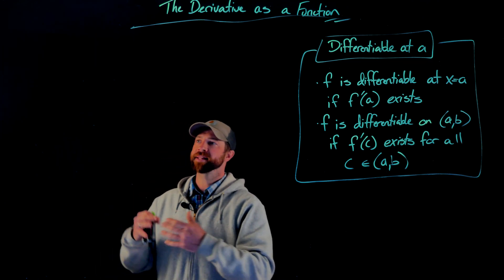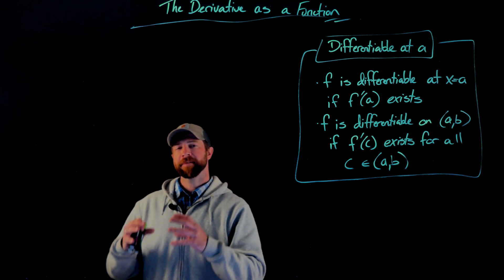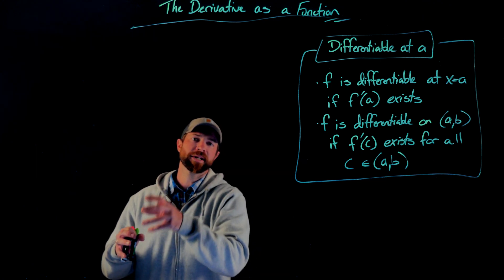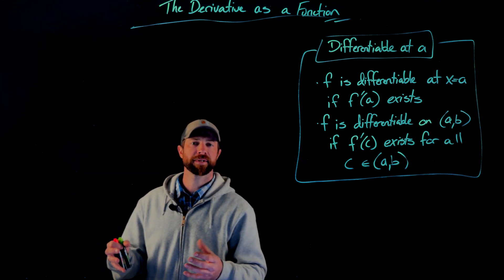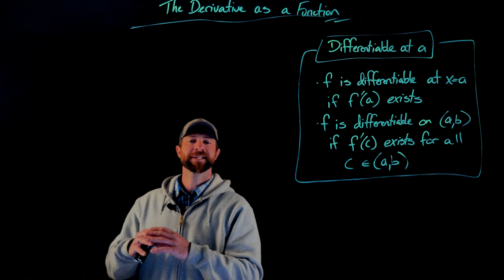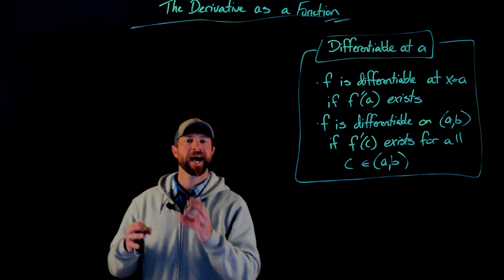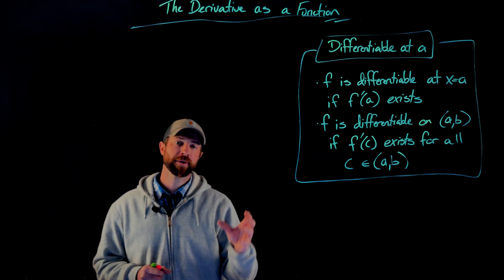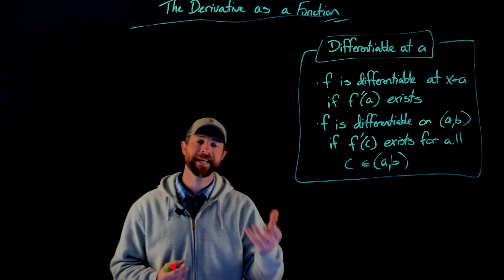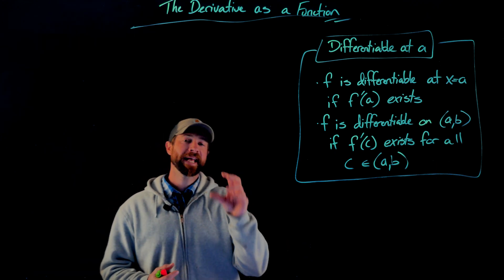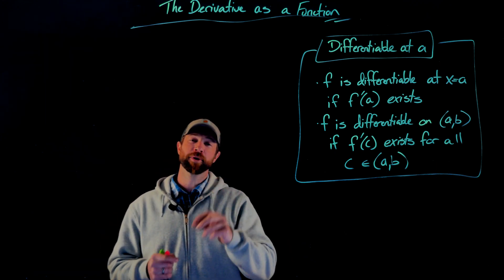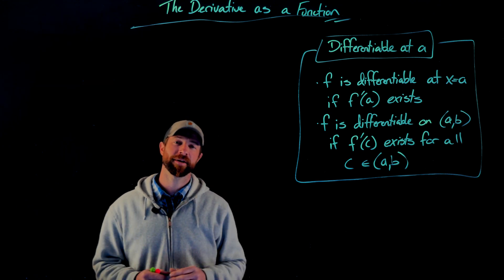So let's say you take the derivative of a function, but then that function has an issue where maybe the denominator goes to zero or becomes zero when you plug in a value. We would say that f is not differentiable at that point. We also say f is differentiable on an interval, let's say (a, b), if the function is differentiable at every point in that interval.